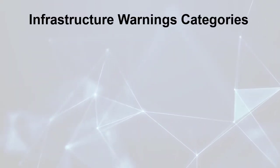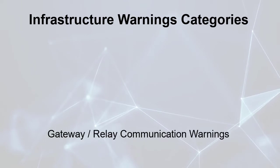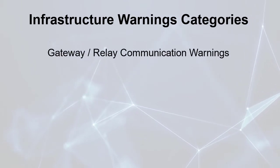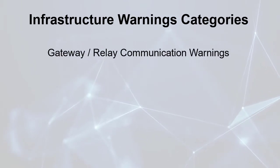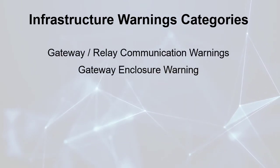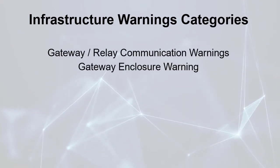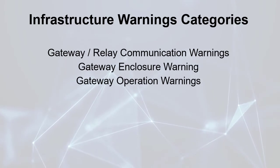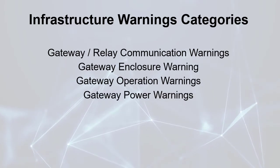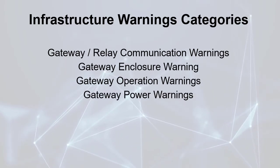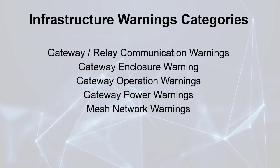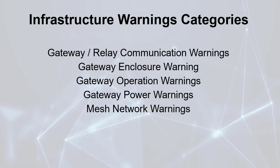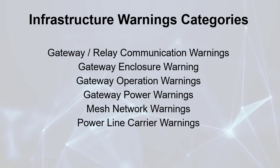The infrastructure warnings can be grouped into six categories: gateway and relay communication warnings, gateway enclosure warnings, gateway operation warnings, gateway power warnings, mesh network warnings, and powerline carrier warnings.